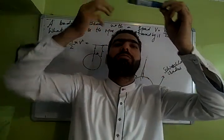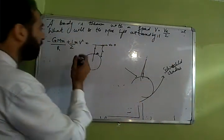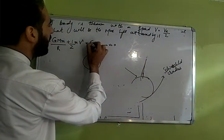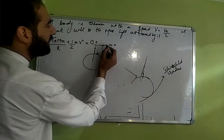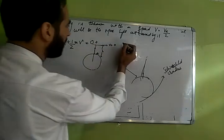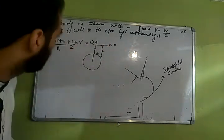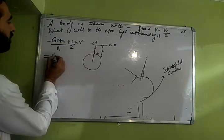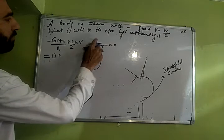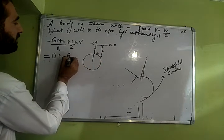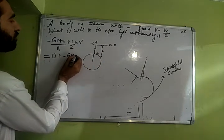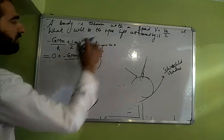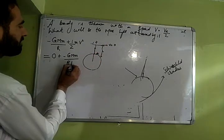To kya aayega yahan pe? Kinetic energy kya likhoge? Zero plus bolou beta yahan potential energy. Yahan pe main likhunga potential energy thoda yahan pe is equal to yahan likho zero plus bolou yahan pe kitni potential energy? Minus g capital M small m divided by, kitni? It is r plus h.